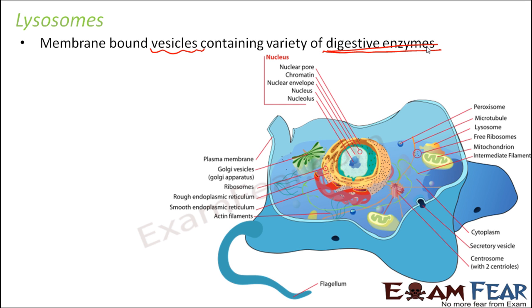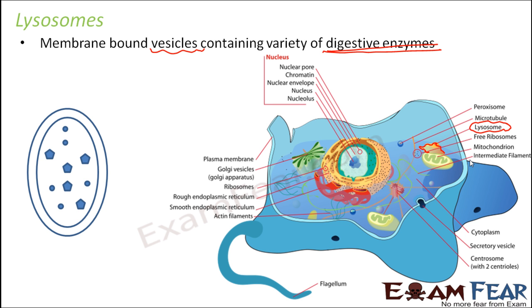Let us see where lysosomes are located. The lysosomes are located here — these are small vesicles. You can see this structure here is the lysosome. Now, what are these digestive enzymes we are talking about? What kind of digestive enzymes are present inside lysosomes?